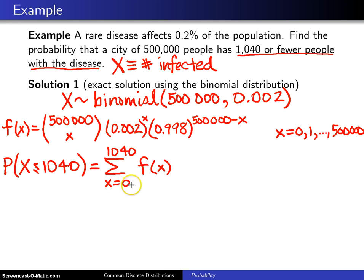will have 500,000 choose 17. Well, that's going to involve 500,000 factorial and such. This is going to be a real mess. But this turns out to work out to, to four digits, 0.8995.